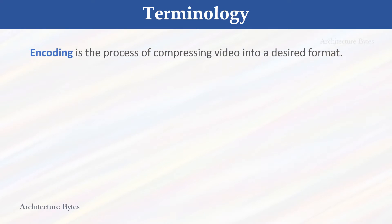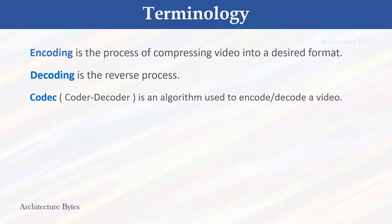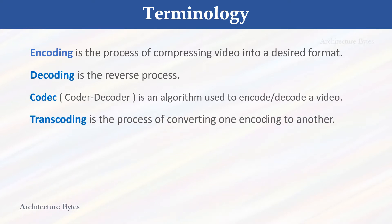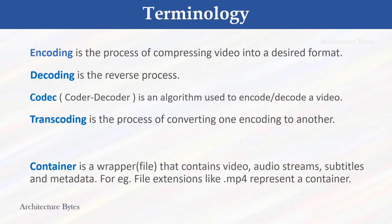Let's go over some important concepts and terminology. Encoding is the process of compressing video into a desired format. Decoding is the reverse process. A codec, that is Coder-Decoder, is an algorithm used to encode or decode a video. Transcoding is the process of converting one encoding to another.